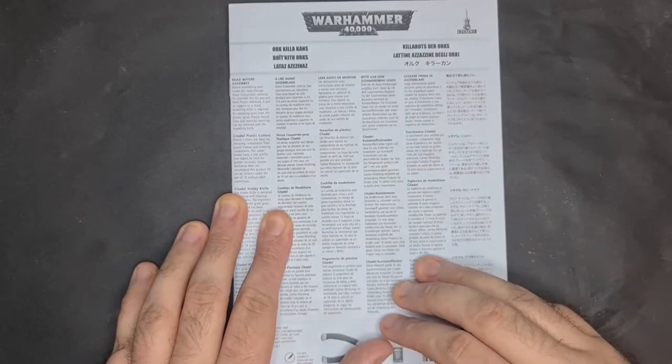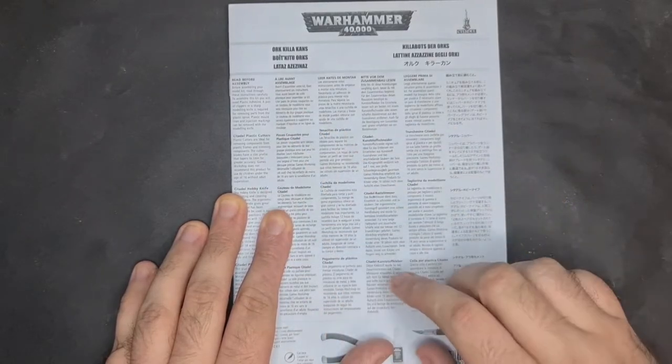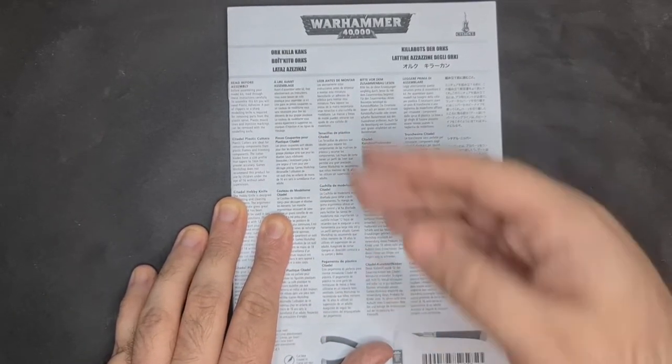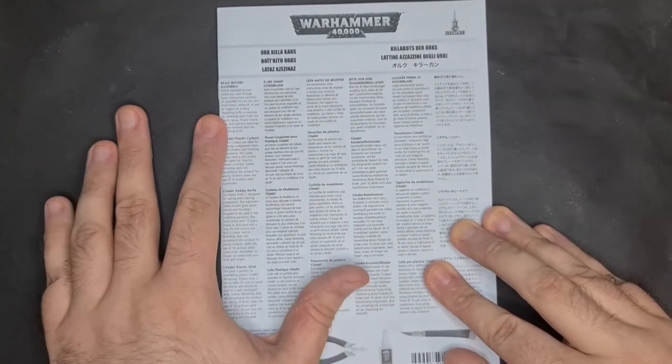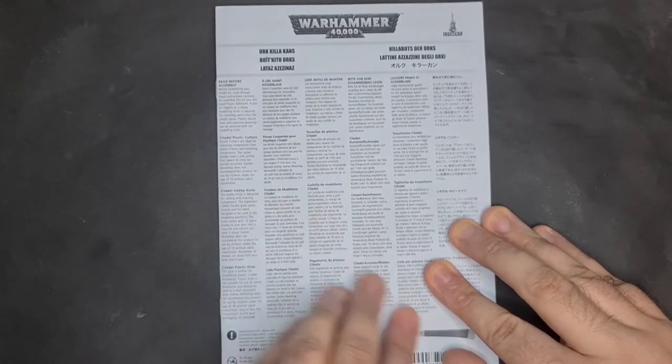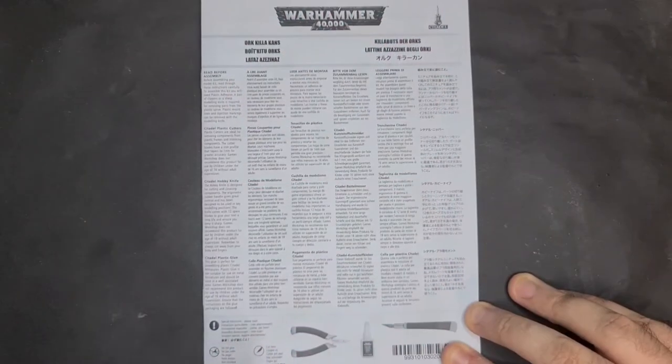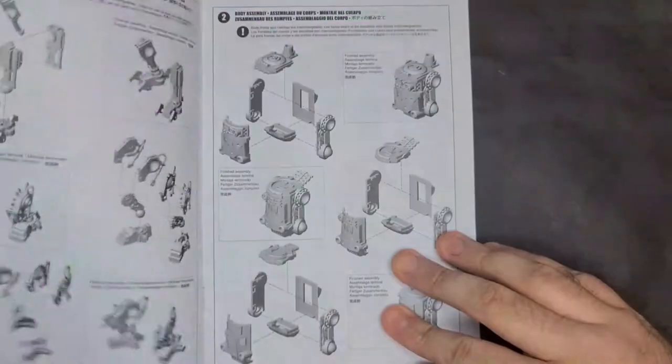Read before assembly. Before assembling your model kit, just says to read through the instructions. To assemble this kit you'll need plastic adhesive, a pair of clippers or a sharp modeling knife is required to remove parts from the plastic sprue. Plastic mold lines and injection markings can be removed with the modeling knife. Now Citadel sell their tools, but there's plenty of other hobby companies that sell tools.